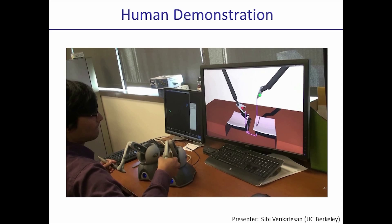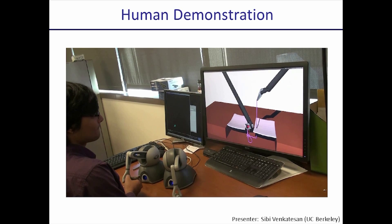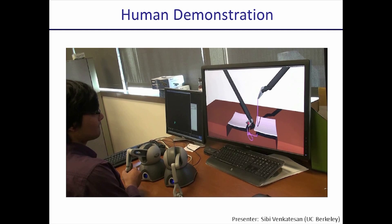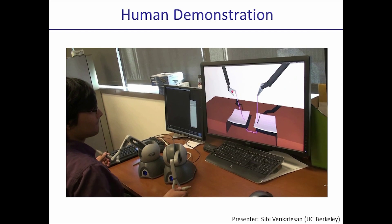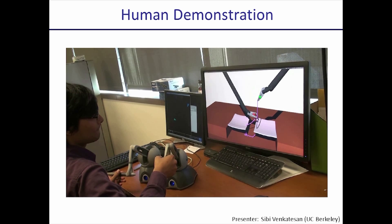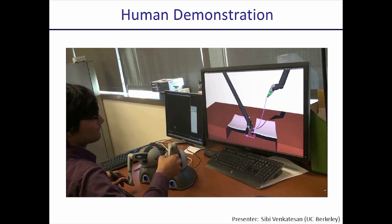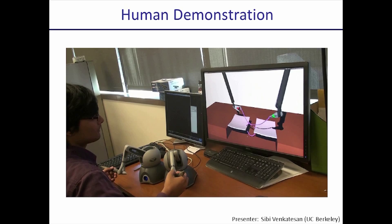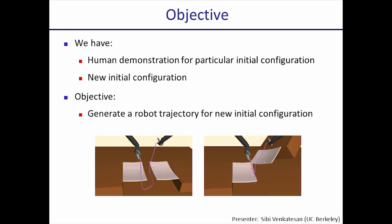The task is to first pierce the flap on the right, then pierce the flap on the left, then loop over the suturing thread twice, and then tighten to get a surgical knot. We have a human demonstration for a particular initial configuration, and the robot is presented with a new configuration. Essentially we want to generalize our demonstrated trajectory so that the robot may perform it for a new configuration.